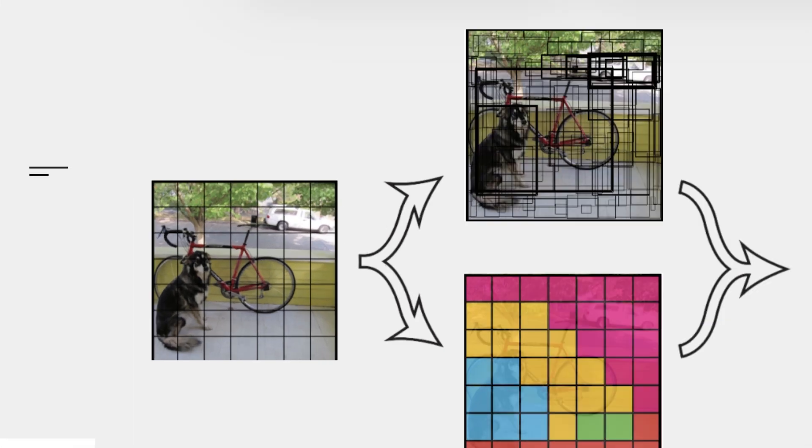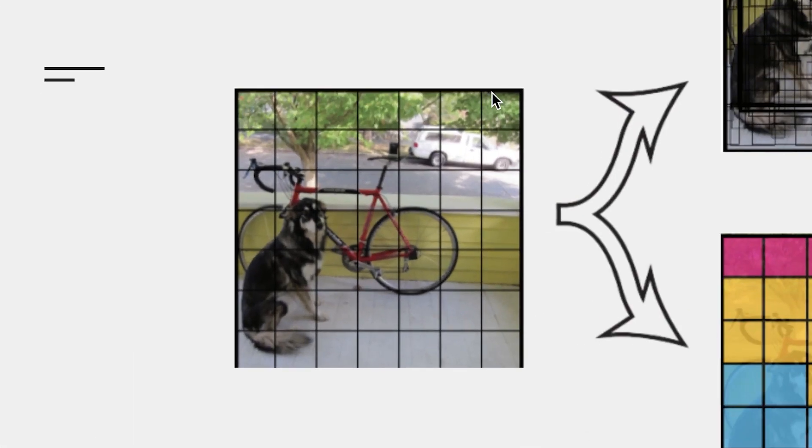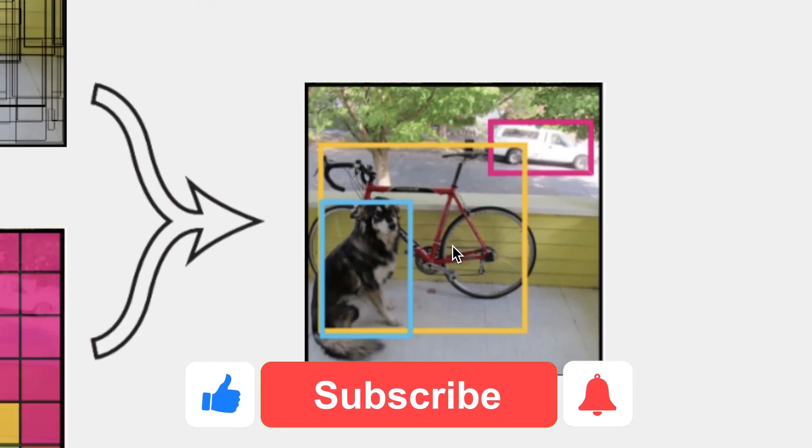As you can see in this image, this image is first divided into this n-by-n grid and then they predict all of these candidates that we call anchor boxes and then the model will optimize these anchor boxes to find the final bounding box.